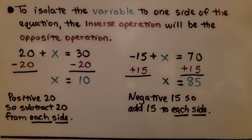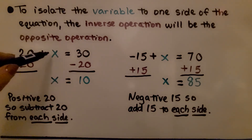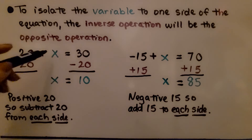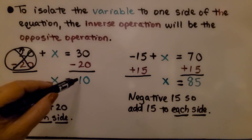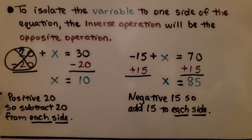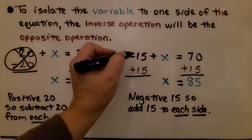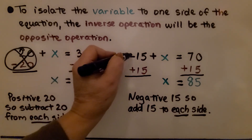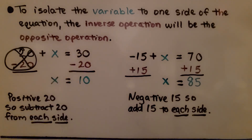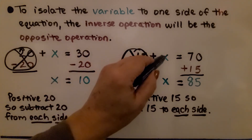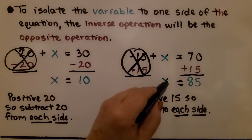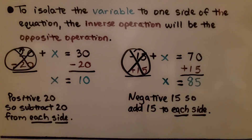To isolate the variable to one side of the equation, the inverse operation will be the opposite operation. If we have x plus 20 on one side, we subtract 20 from each side — that creates a zero pair and gives us a positive 10 on the other side. For example, with negative 15 plus x equals 70, because that is a negative 15 we add 15 to each side. Negative 15 plus 15 creates a zero pair, isolating x. On the other side we have 85, so x equals 85.